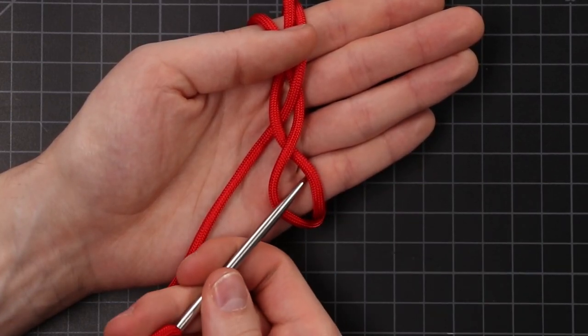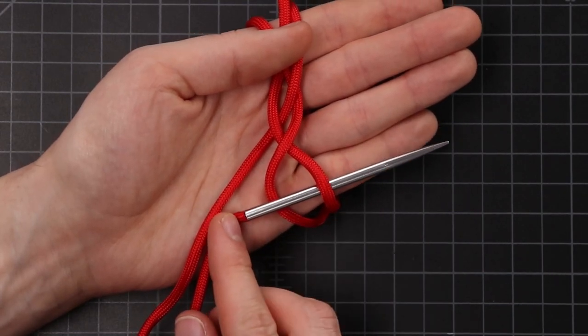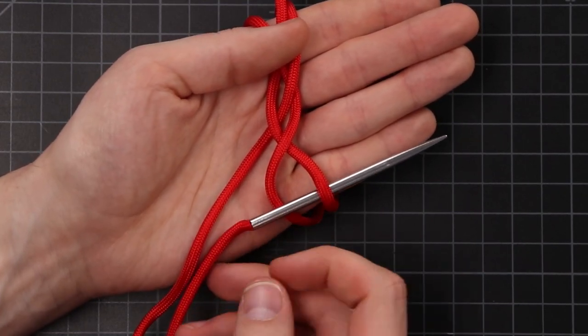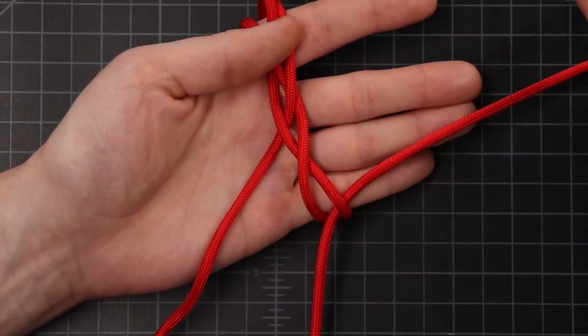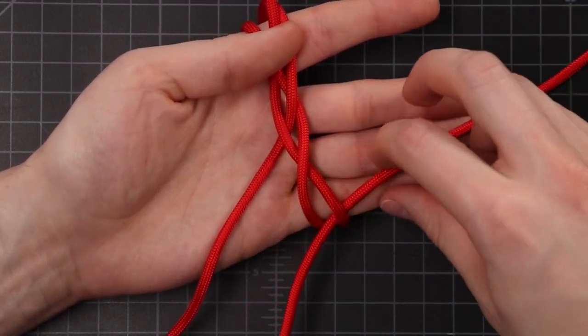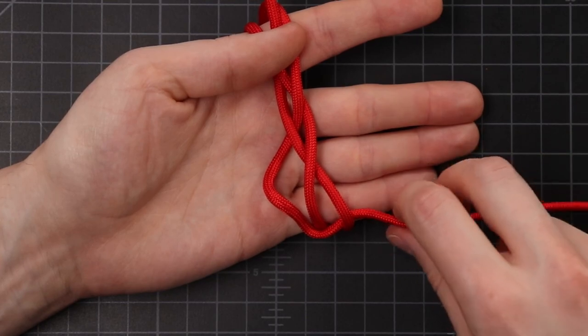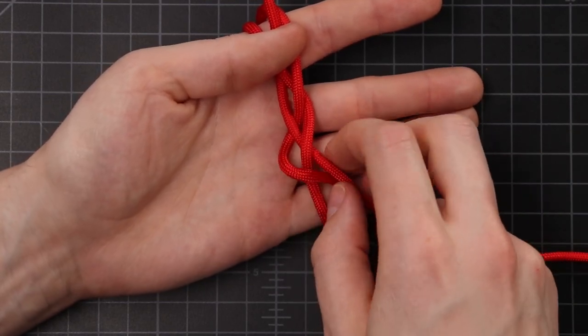Then we're going to bring the end of our cord down through. Over that first cord, underneath the second. That's going to be a recurring pattern. There we go.